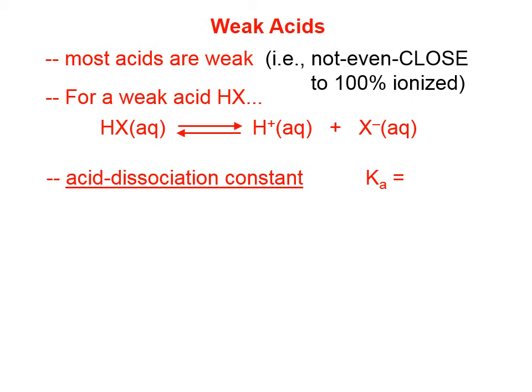As with all equilibrium constants, we write products over reactants. Recall that in an equilibrium constant, we don't write a pure solid or a pure liquid — only aqueous or gaseous substances. For weak acids, all the species are aqueous, so we have the two product species, H-plus and X-minus (the anion), in the numerator, and the neutral acid in the denominator.